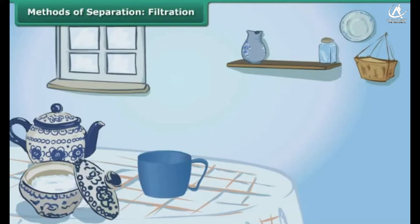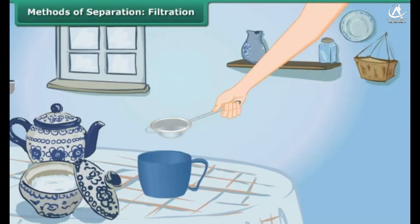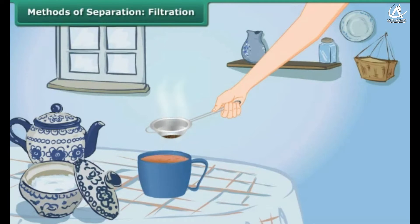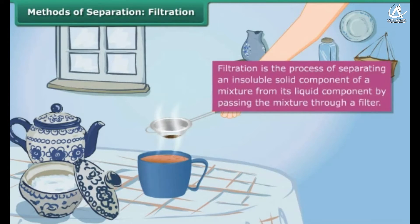Children, after preparing tea, this tea stall owner pours the mixture into the tea strainer. The tea passes through the holes of the tea strainer, leaving behind the tea leaves in it. This process of separation is known as filtration.